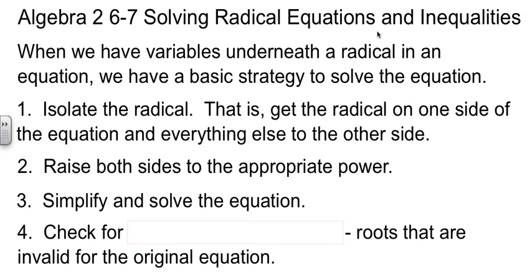So when we have variables underneath the radical in our equation, we have a basic strategy that works. The first step is to get the radical isolated. Get that square root thing or cube root thing or whatever it is by itself. Get it on one side and everything else away from it.